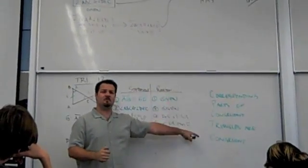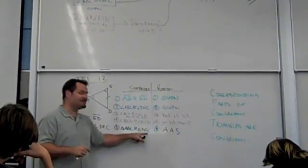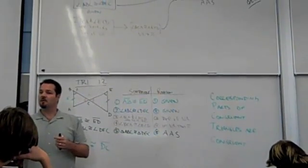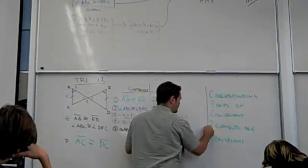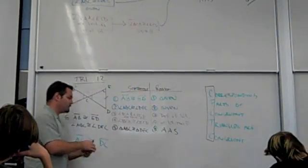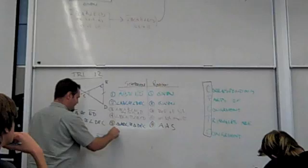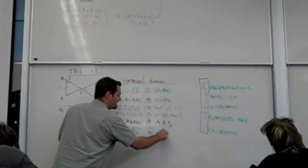Does that make sense to you, that corresponding parts of congruent triangles, like AC and DC, are also congruent? Sure seems like a lot to write. So the reason is CPCTC.